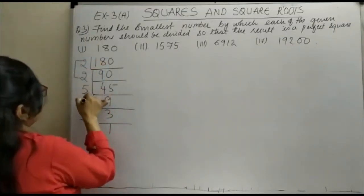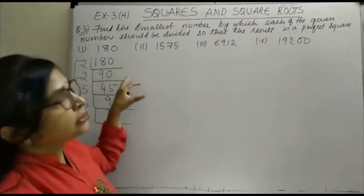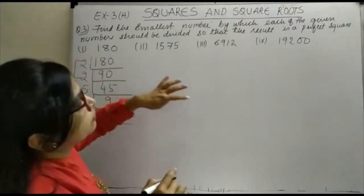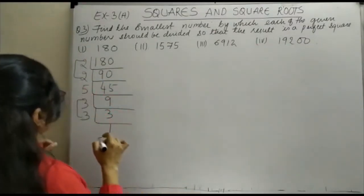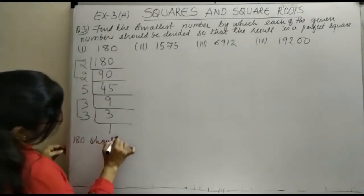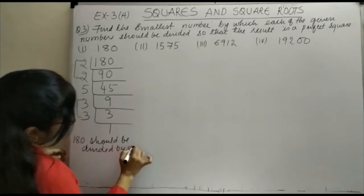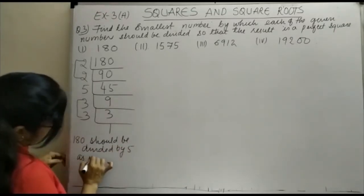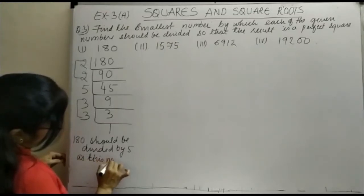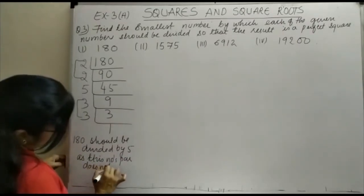You can see that 2 is paired and 3 is paired, but 5 does not have a pair — it does not exist as a pair. So 180 must be divided by 5 to make it a perfect square.